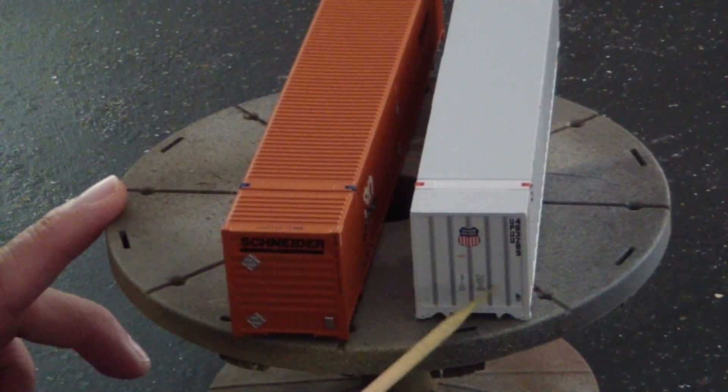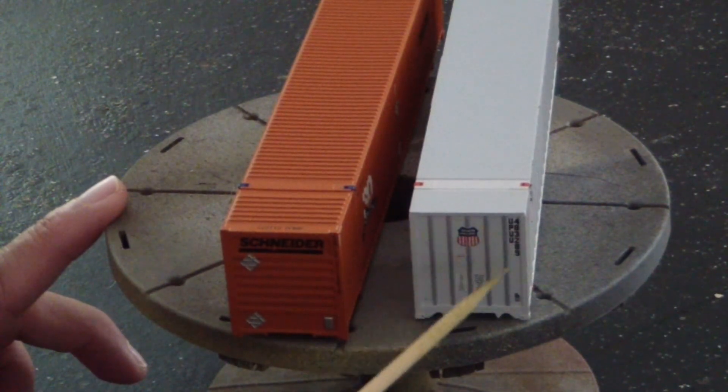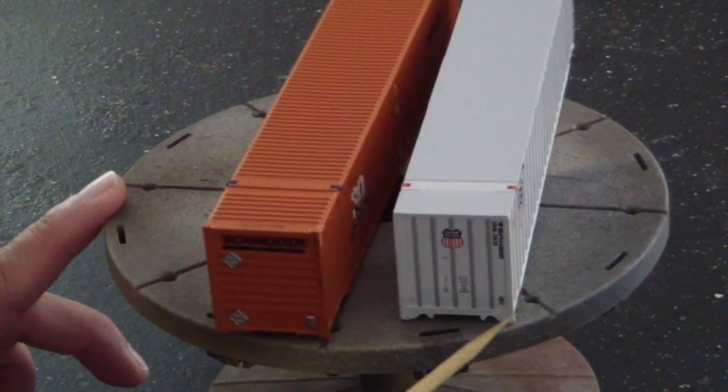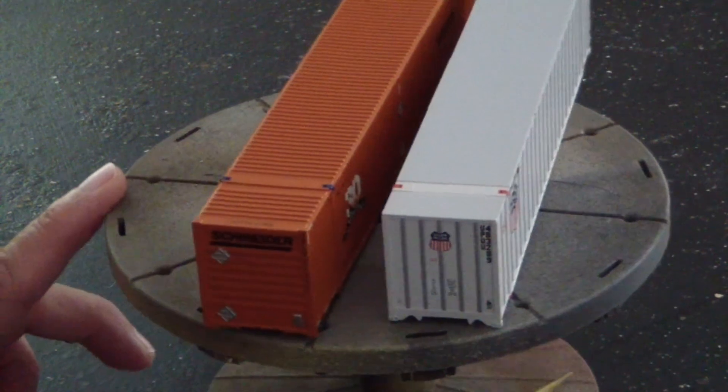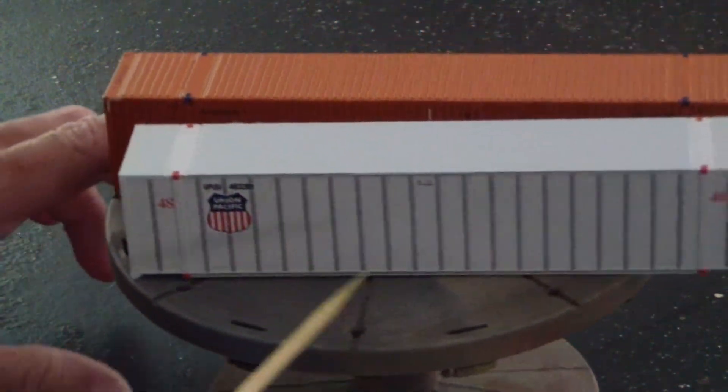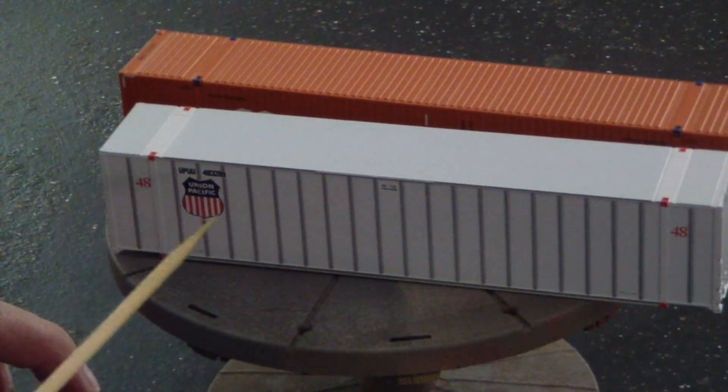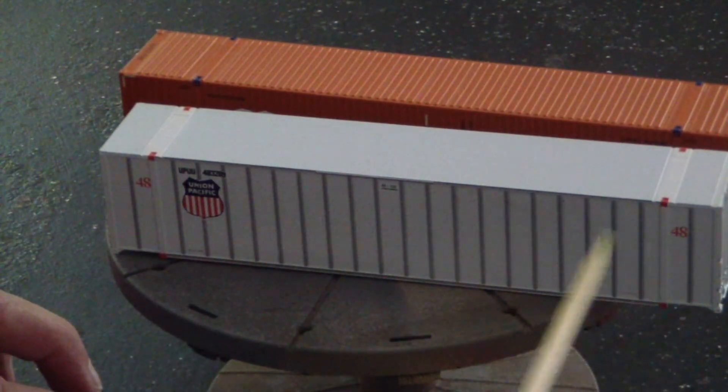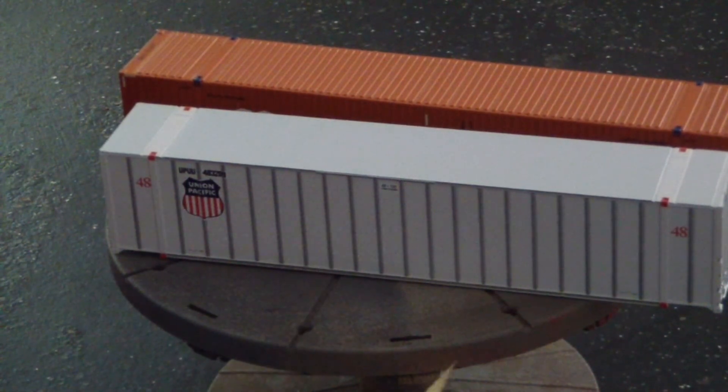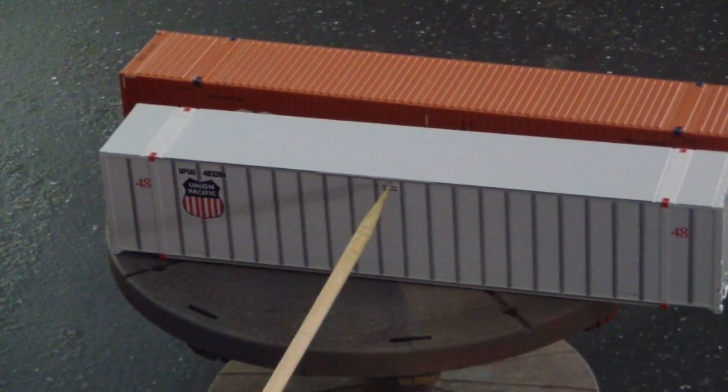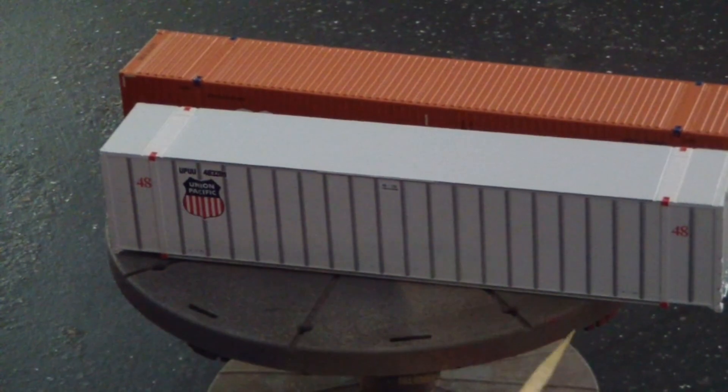You can see here, these are the ribs. It has the Union Pacific, it also has the container numbers, the placards. This one here says 48 feet on both sides Union Pacific. There are no placards on this side except for this. There is no safety striping.